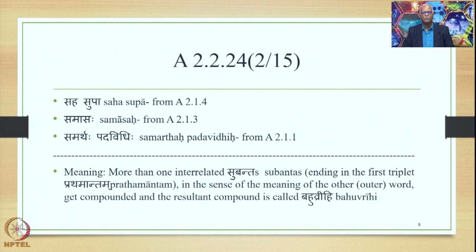After putting all these together, we get the following meaning: more than one interrelated Subantas — Anekam Samartham Subantam — ending in the first triplet, that is Prathama Antam, in the sense of the meaning of the other or outer word, Anyapadarthe, get compounded and the resultant compound is called Bahuvrihi.